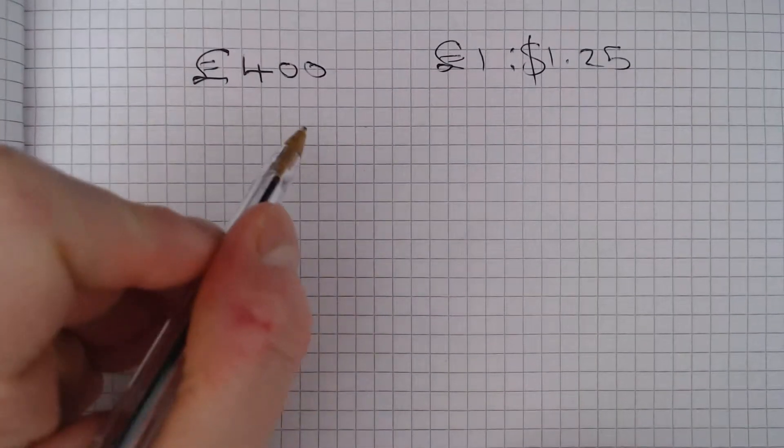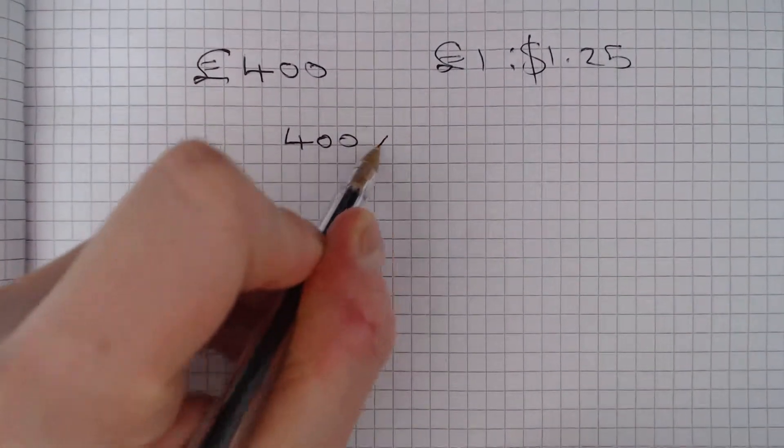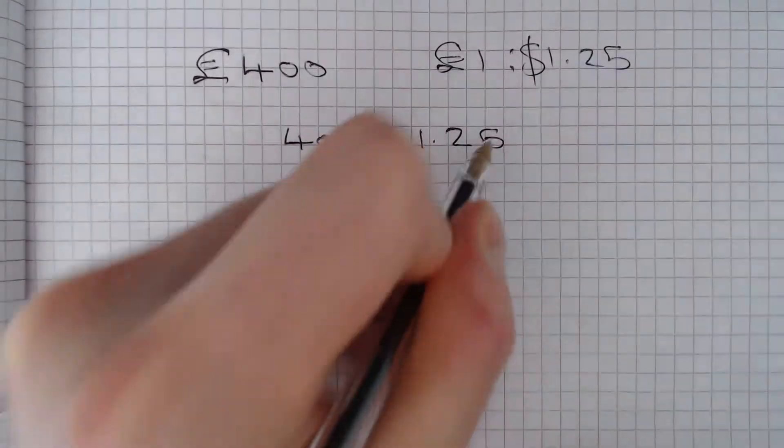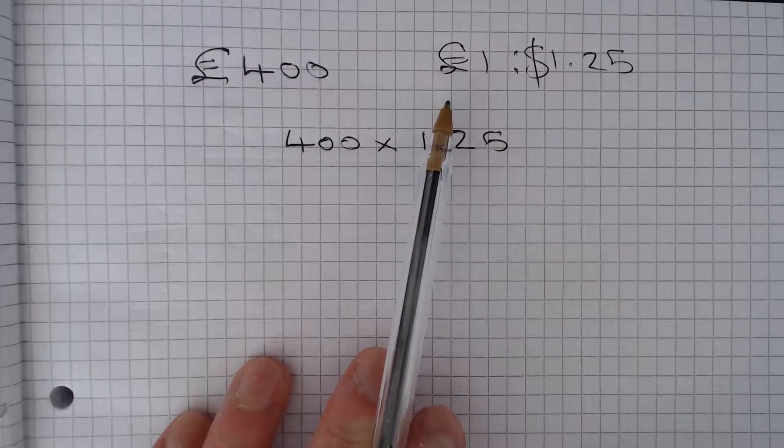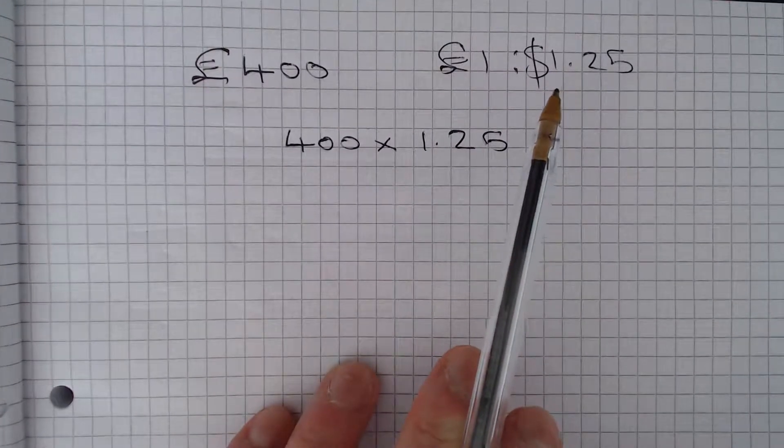So clearly the calculation we need to do is £400 multiplied by $1.25. That's because if £1 is equal to $1.25, then £400 is equal to $400 times $1.25.